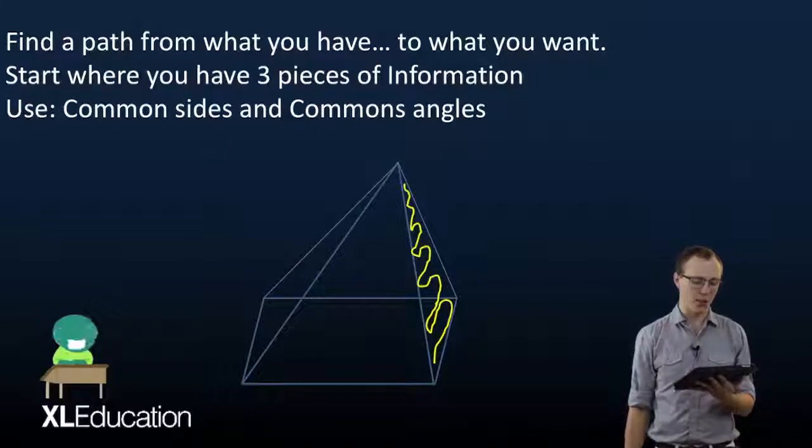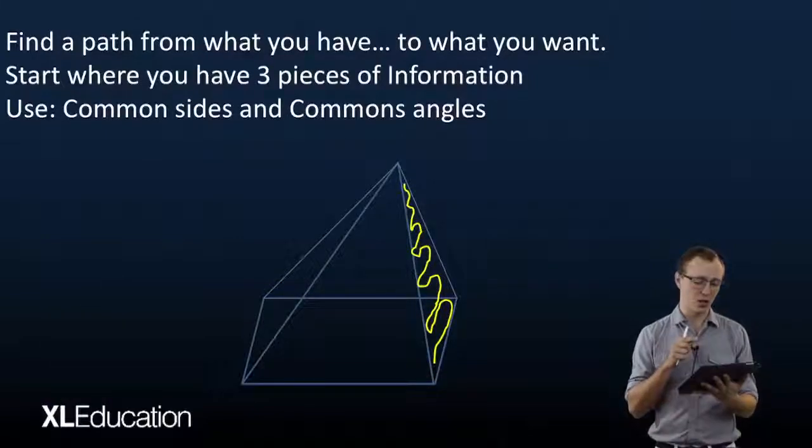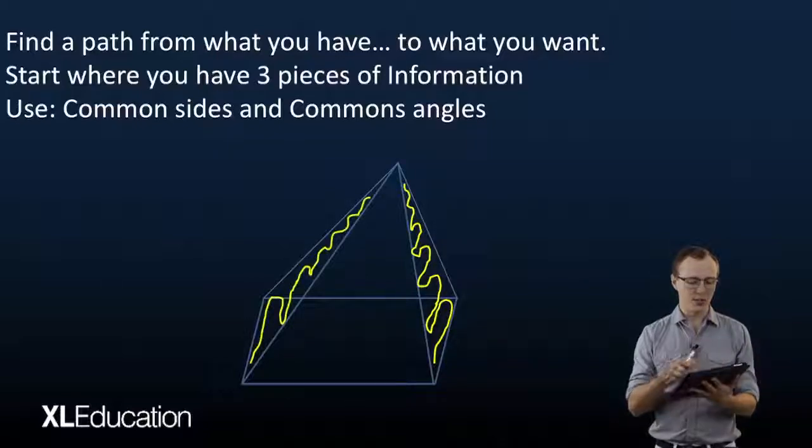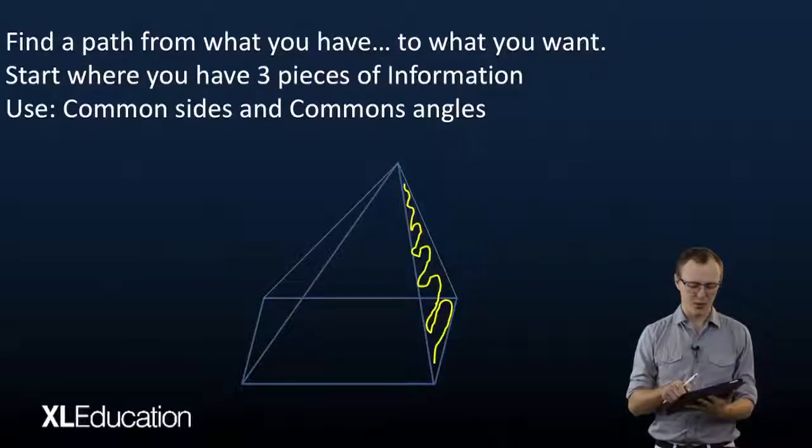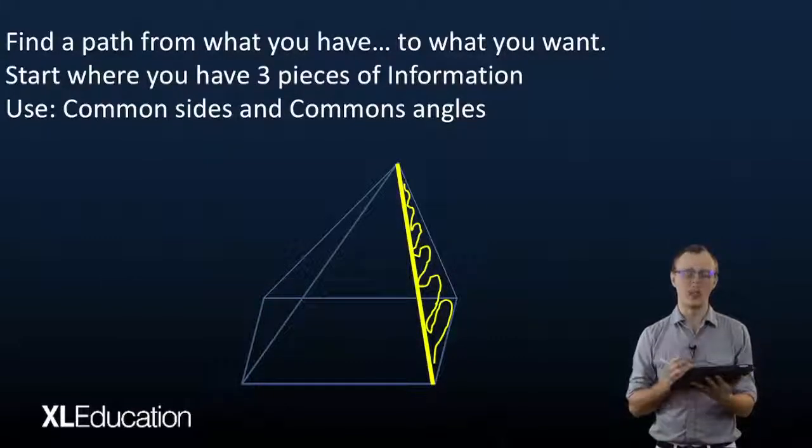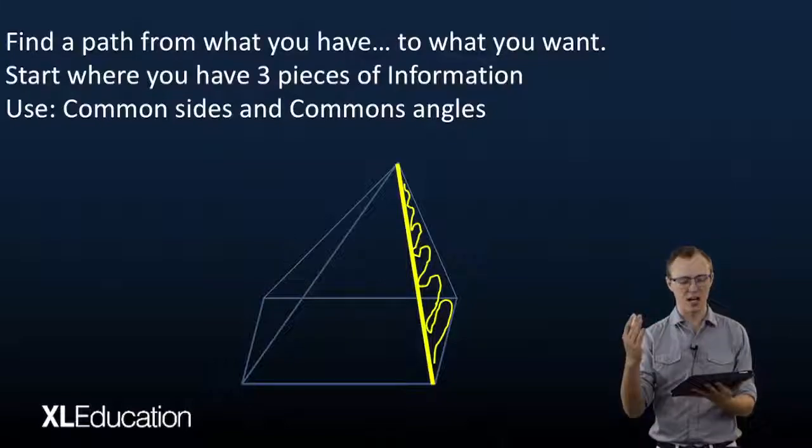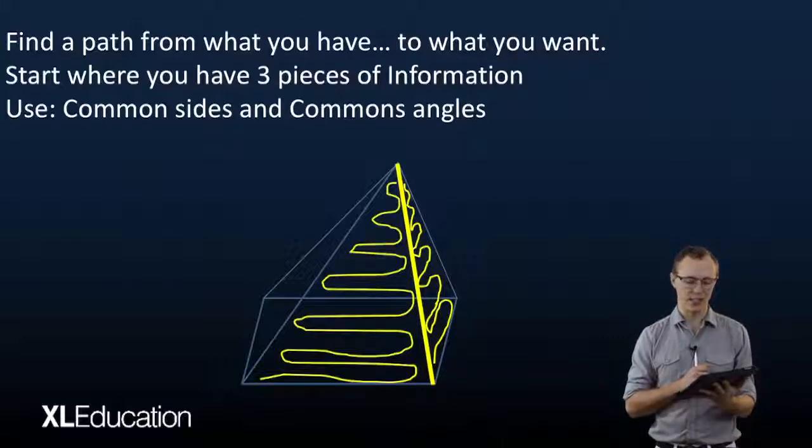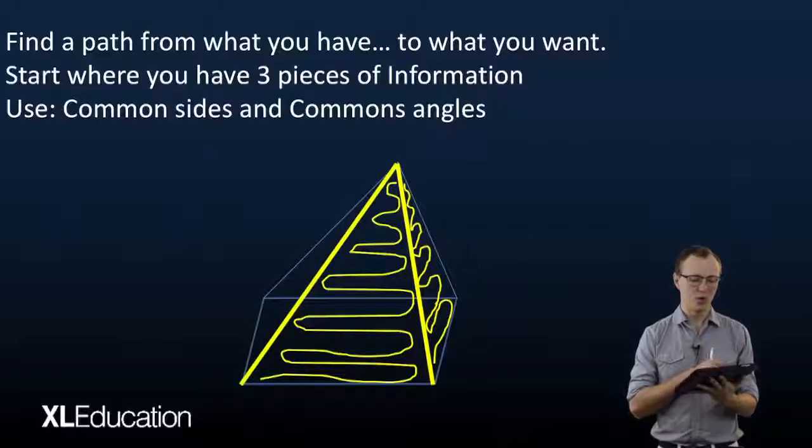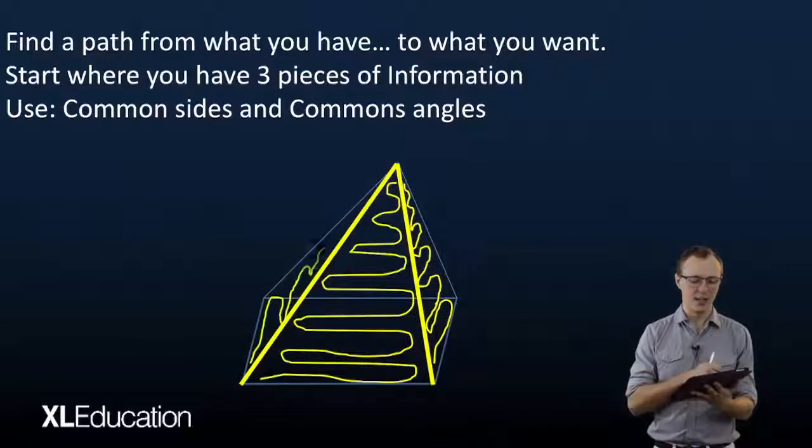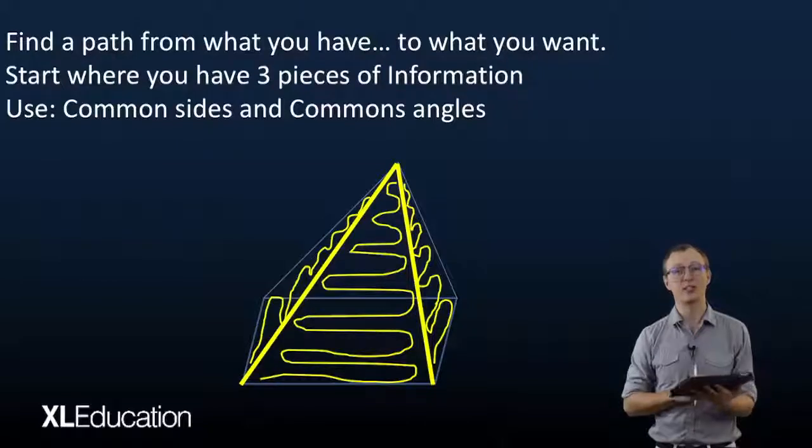So in this diagram, we could start on that side on the right there. Then we want to get to the side on the left. So how do we get there? We see that we've got one side there that connects our one side to the next side. And then once we have information about that side, we use another connecting side to get to the side where we want to be.